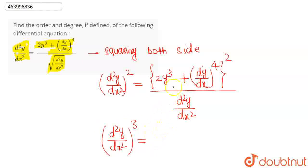If we expand this using a² plus 2ab plus b², we get 4y to the power 6 plus (dy/dx) to the power 8 plus 4y³ times (dy/dx) to the power 4.